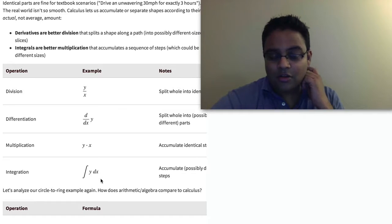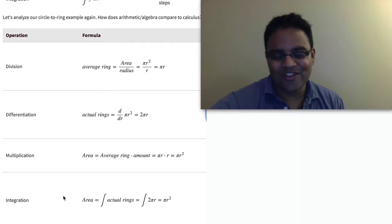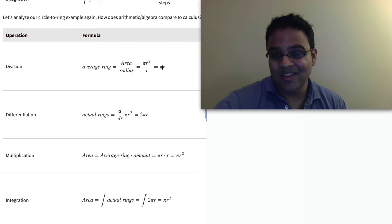So derivatives and integrals are basically stronger or fancier versions of multiplication and division. Let's take a look at our favorite example here, the rings and the triangles. With division, we might take the formula for area and divide by the radius, and that gives us the average ring size, which is pi r. With derivatives or differentiation, we actually get this pattern 2 pi r, which is saying that every ring follows this pattern. In the case of division, we pulled out just a single average ring, and with differentiation, we actually pull out the entire pattern, exactly what's happening in the real circle.